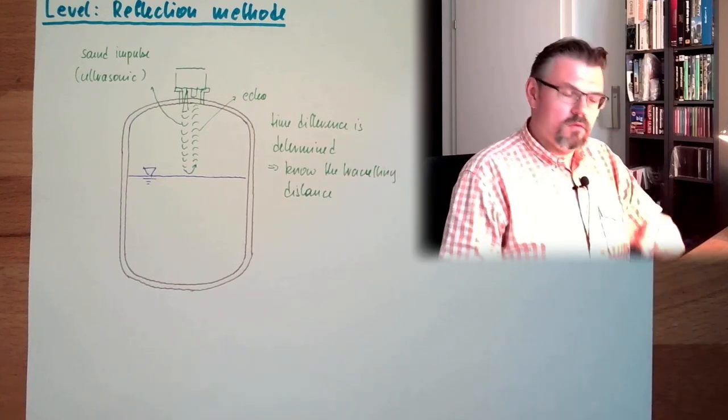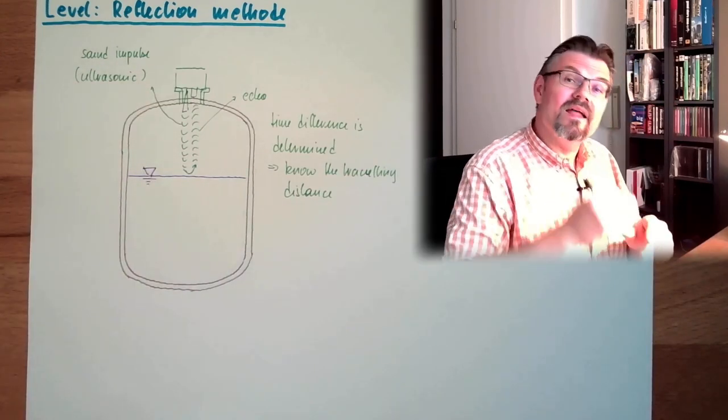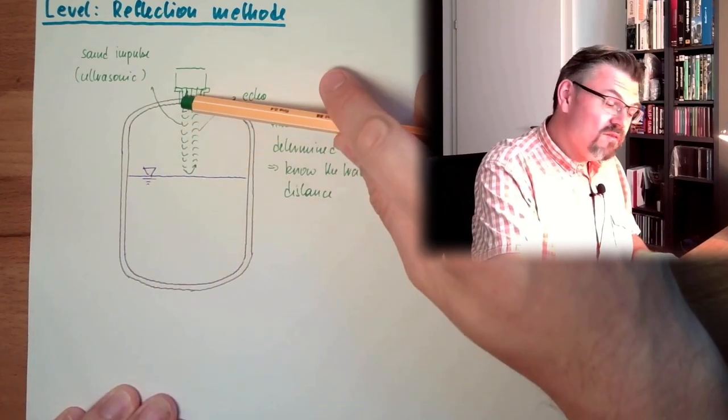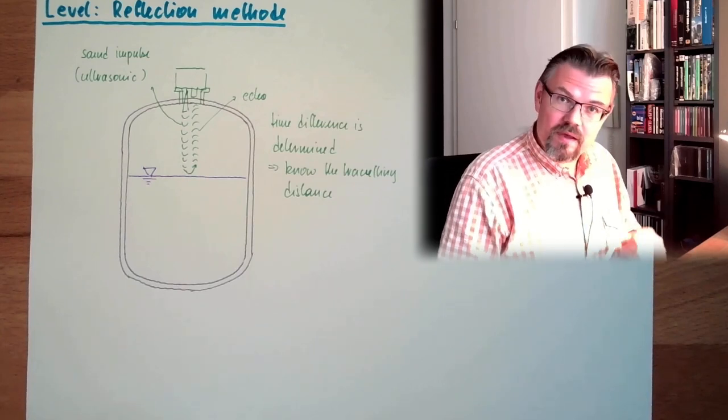And when we know the traveling distance, we know the point where it's reflected. Attention, the traveling distance is of course two times the distance, because it needs to go there and back again.